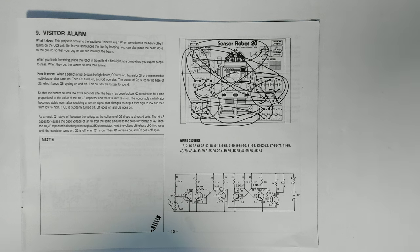So that the buzzer sounds a few extra seconds after the beam has been broken, Q2 remains on for a time proportional to the value of the 10 microfarad capacitor and the 33 kilo ohm resistor. The monostable multivibrator becomes stable even after receiving a turn-on signal. If Q5 is suddenly turned off, Q1 goes off and Q2 goes on. As a result, Q1 stays off because the voltage at the collector of Q2 drops almost to zero volts.